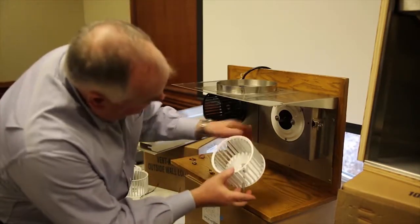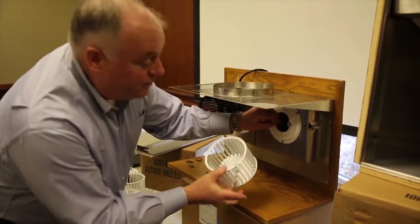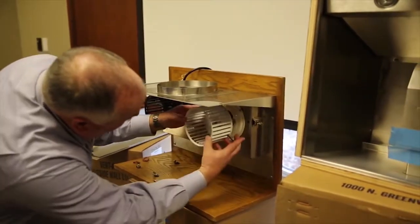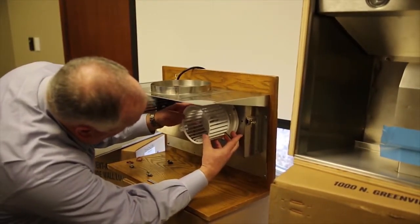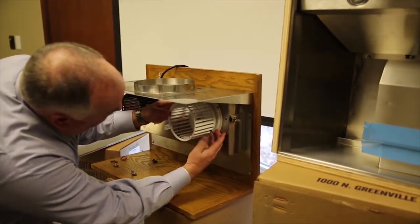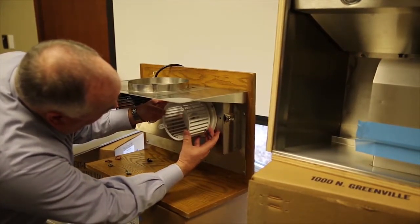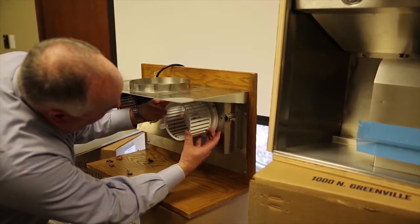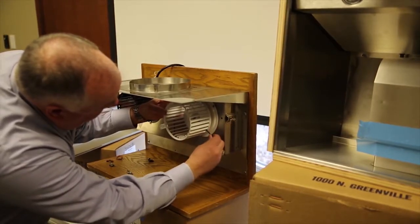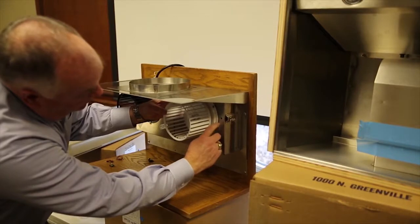Take the Allen wrench - there's a flat spot on the shaft of the motor. Point that Allen wrench right at the flat spot because that's where the set screw needs to go. Push it back as far as you can, and then pull it toward you just as little as you possibly can so that it doesn't hit the back of the motor plate.